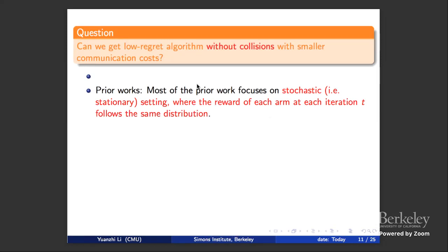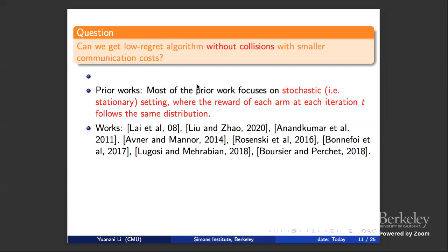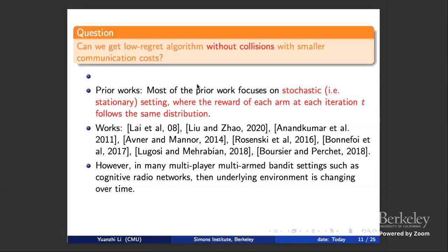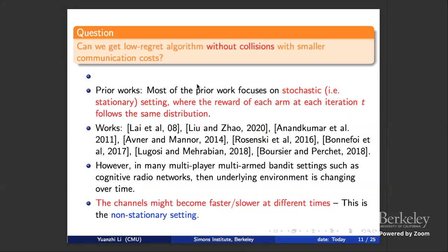Most prior works focus on the stochastic setting, where the reward of each arm at iteration t follows the same distribution — the environment is not changing over time. But in multiplayer MAB applications like cognitive radio networks, the underlying environment obviously changes over time, affected by weather, electrical conditions, or magnetic conditions. Channels can become faster or slower at different times — they are not stationary. You really want to learn from this changing environment.